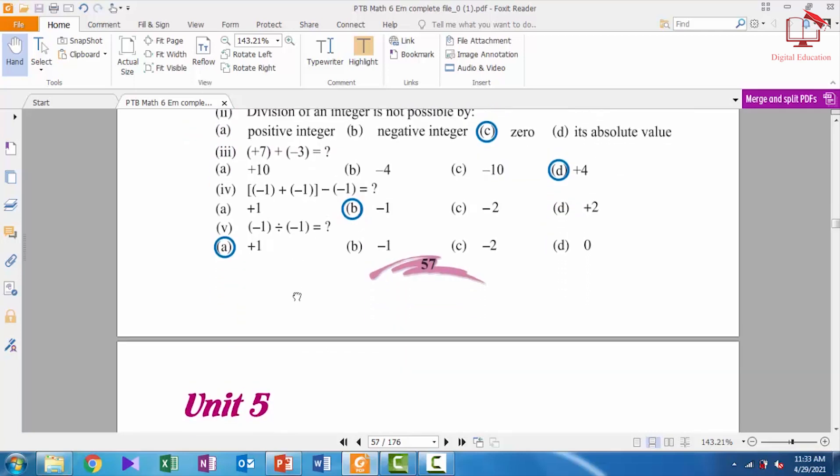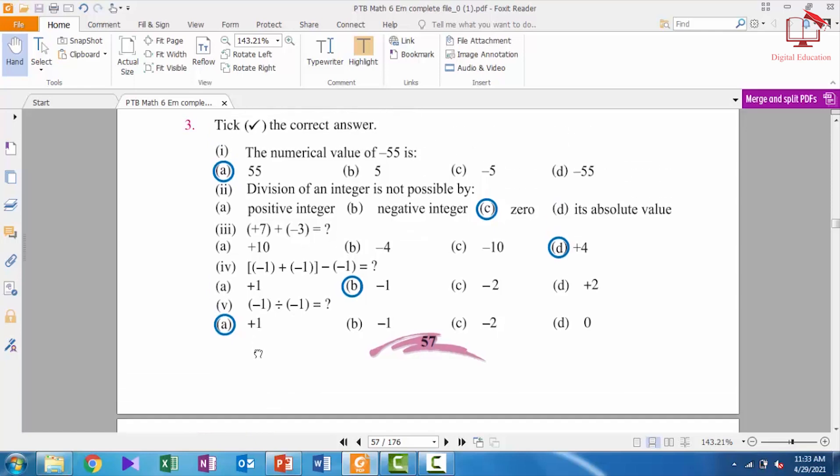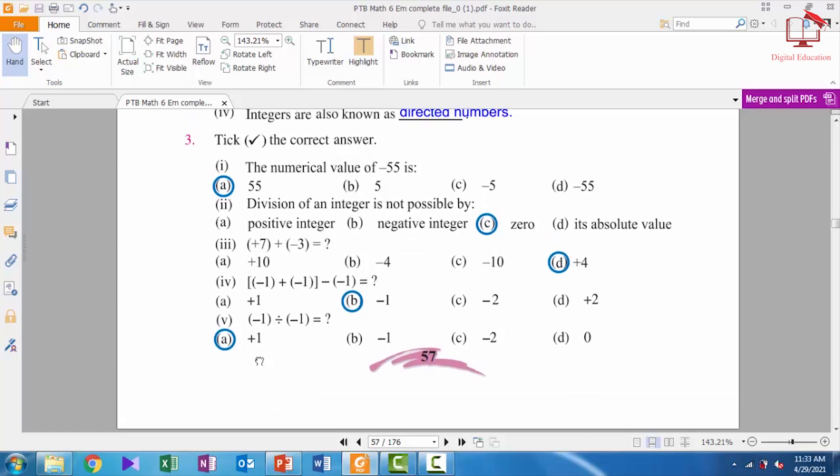Number 5: if we divide -1 by -1, you know that first we write it in division form. Then minus and minus cancel each other, then 1 divided by 1 gives us positive 1. So students, this is the objective exercise 4.